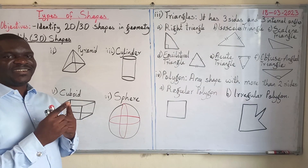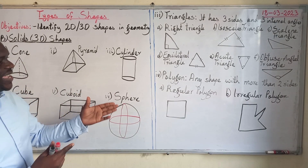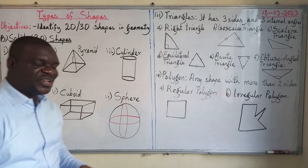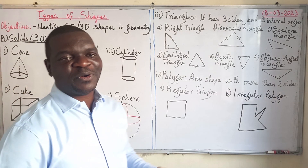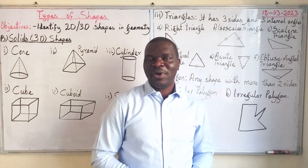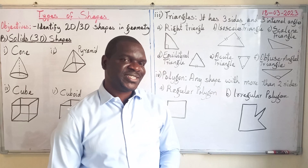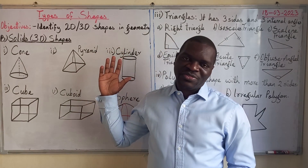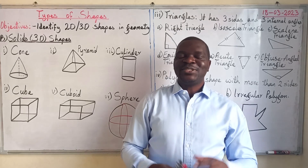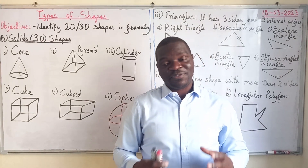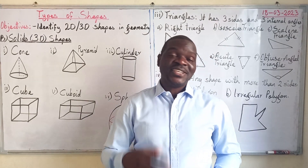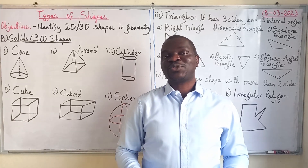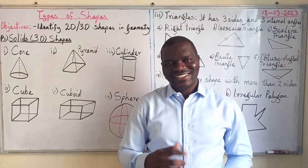The last solid shape we'll look at today is a sphere. A sphere is different from a circle because it is three-dimensional. Thank you very much for following today's lesson. Next time we'll treat the different aspects of each shape. See you in our next lesson where we shall start with squares — until then, ciao!